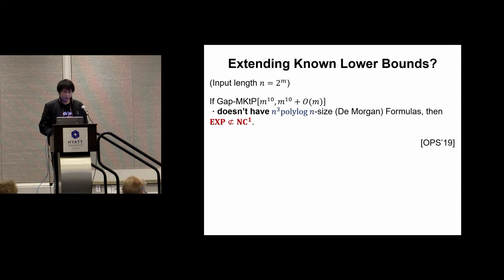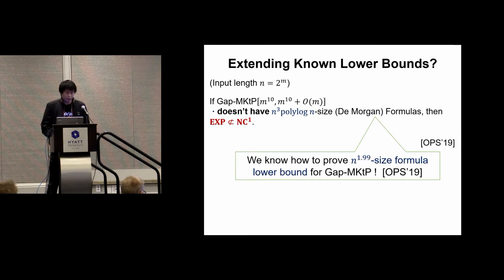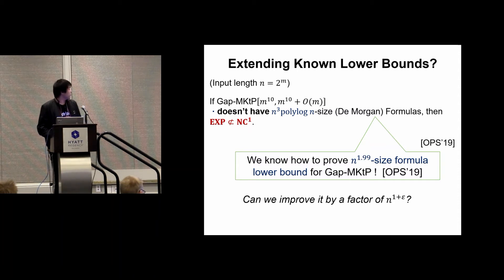So it looks promising that we could somehow first prove a weak lower bound, possibly using natural proof techniques, and then use hardness magnification to get strong lower bounds. It is interesting to compare the lower bound required for magnification with the lower bound we currently know how to prove. In this example, we require a nearly cubic size De Morgan formula lower bound. Actually, for the MKTP language, we know how to prove a non-trivial n^1.99 size formula lower bound. If we could improve this by a factor of n^(1+epsilon), we would have breakthrough results.